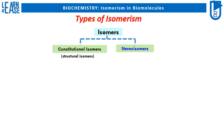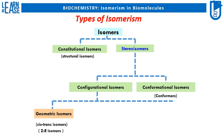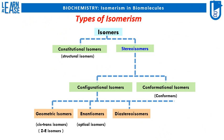Constitutional isomers are also known as structural isomers. Stereoisomers are classified as configurational isomers and conformational isomers, or conformers. Configurational isomers are further classified into four different subtypes: first, geometric isomers, also known as cis-trans isomers and Z/E isomers; second, enantiomers, also known as optical isomers; third, diastereoisomers; and fourth, meso-compounds.